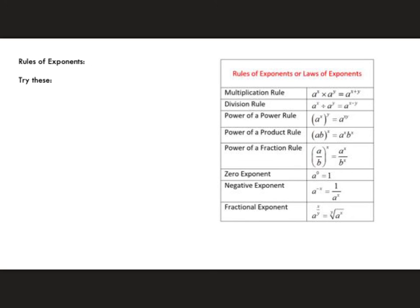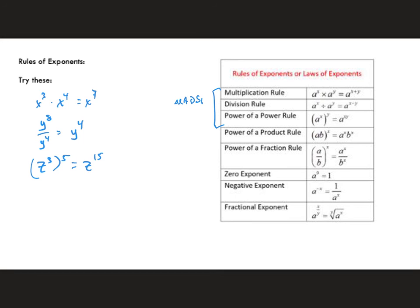One last thing: rules of exponents. We've seen these before, but it's good to remember them especially with variables. x³ times x⁴ = x⁷ (add exponents when multiplying). y⁸ divided by y⁴ = y⁴ (subtract exponents when dividing). z³ raised to the fifth power = z¹⁵ (multiply exponents for power to a power). Remember the acronym MAD SPAM: Multiply-Add, Divide-Subtract, Power-Multiply.